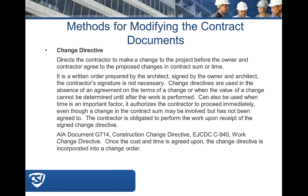Kevin adds that a change directive essentially serves as a promissory note to the contractor. When the contractor countersigns the AIA G714, it can be used for modifying the contract price per the A201, whereas the EJCDC C940 cannot be used for changing the contract price or contract time. Kevin uses EJCDC documents in his work, and his input on the differences between document sets is appreciated.